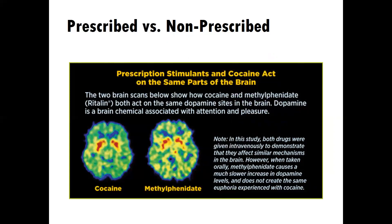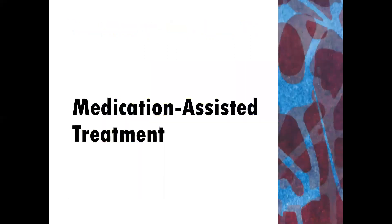The major difference is that cocaine cannot be regulated and controlled in the same way as a prescribed medication. In other words, if you were able to put cocaine into a pill form and give it to someone in the same amount every day, there would be other issues with cocaine — it's a very addictive drug. But in terms of benefits, it would be quite similar to methylphenidate in terms of, for example, attention and ability to attend.